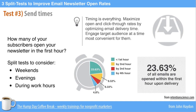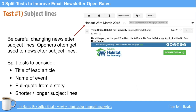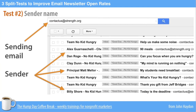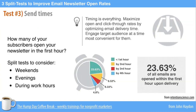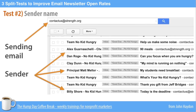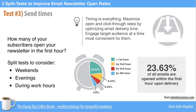So we have the three split tests: subject line, sender, and send times. These are very basic split tests you can do with your email newsletter. By testing and tweaking these elements, you will increase your open rates. Let's go ahead and do it.